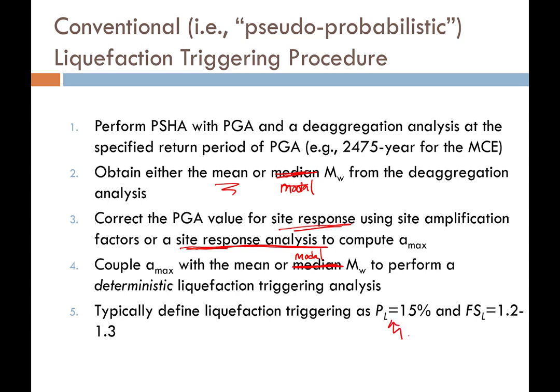By the way, that probability of liquefaction of 15% would correspond to a factor of safety of 1.0. So if we increase the factor of safety to 1.2 or 1.3, the probability of liquefaction is right around 1% — and that's a gross example of over-conservatism in our discipline. I have another lecture on my Office Hours YouTube page where I talk specifically about this issue, and I strongly recommend checking it out.